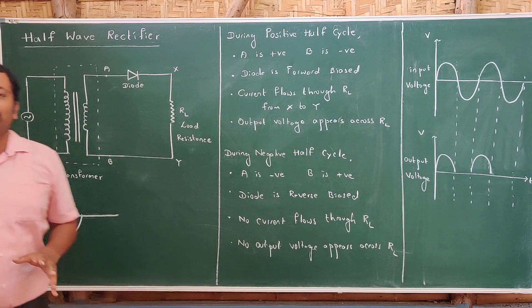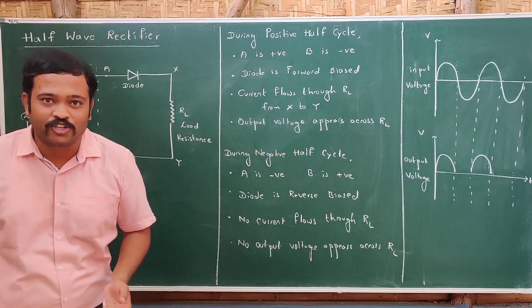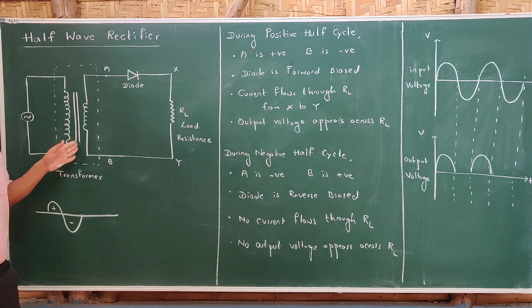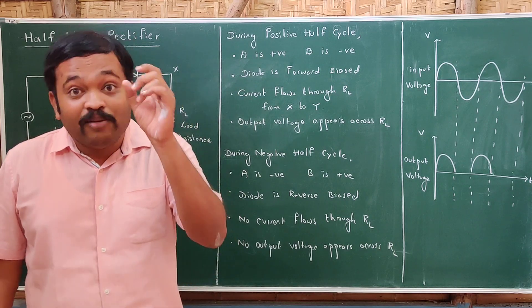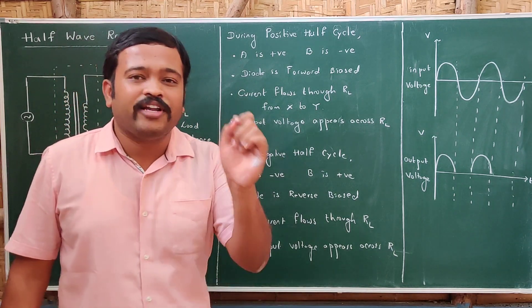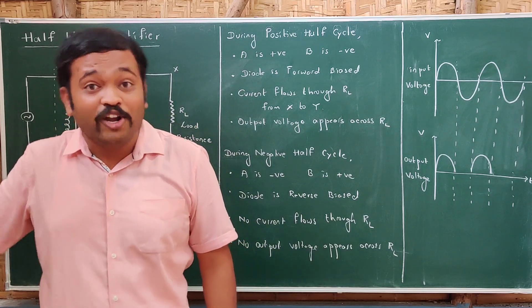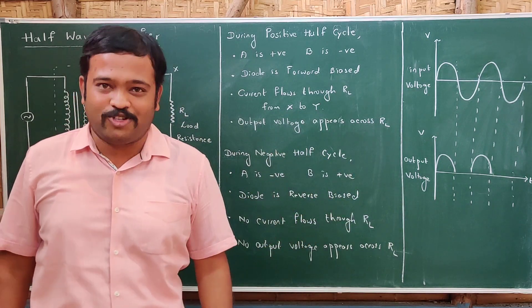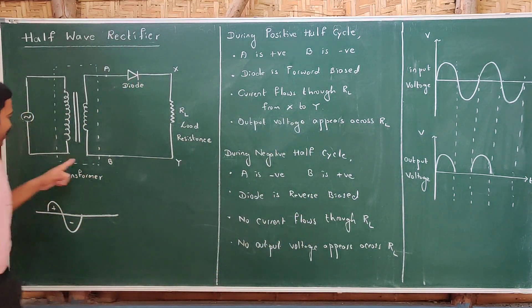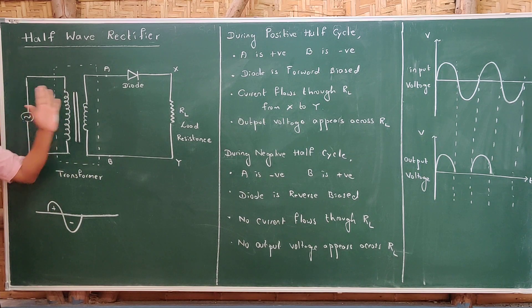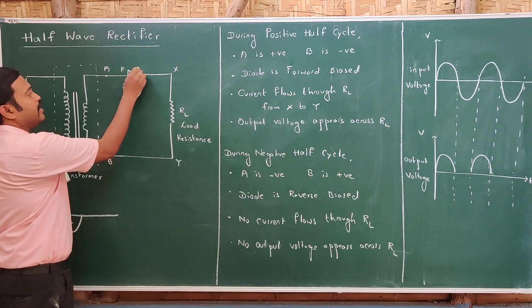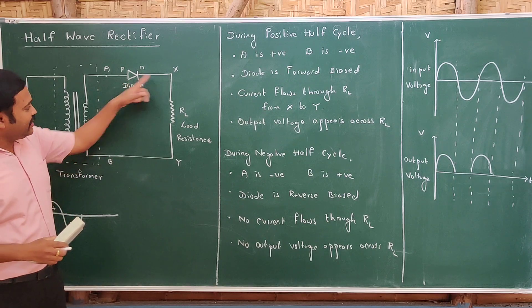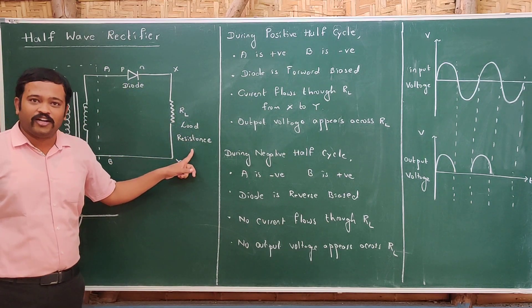A transformer is a device which converts high voltage to low voltage or low voltage to high voltage. Here we are using a step-down transformer because the AC at your home is about 220 to 240 volts, but the mobile charger requires about 4 volts. So we need to step down the voltage using a transformer. After the transformer, the circuit is connected to a diode — this is the P end and this is the N end — and then to a load resistance.